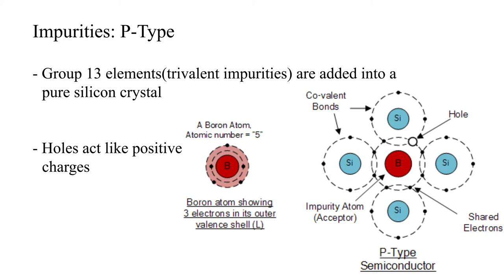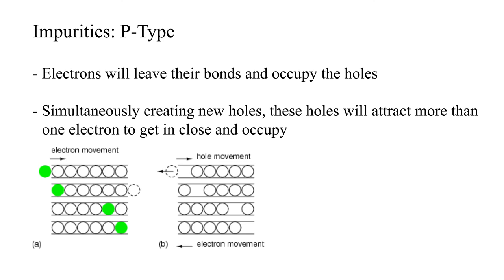However, there will be one silicon atom left which cannot fill its outer shell, thus a hole will be created in the outer shell of this silicon atom, which will act like a positive charge. In this case, electrons shared by other silicon atoms will leave their previous covalent bonds and occupy these holes.